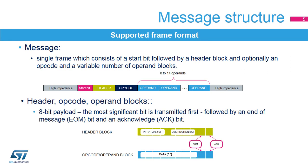The supported frame format consists of a start bit followed by a header block and optionally an opcode, then a variable number of operand blocks. Header, opcode, and operand blocks consist of an 8-bit payload where the most significant bit is transmitted first, followed by an end-of-message or EOM bit and an acknowledge or ACK bit.